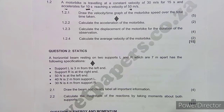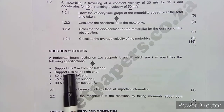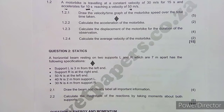Quickly looking into the questions from this paper, we are given a statics question worth 10 marks. We are given a horizontal beam resting on two supports, L and R, which are seven meters apart. The specifications are: support L is three meters from the left end, support R is at the right end, 50 newtons at the left end, 40 newtons two meters from support L, 30 newtons four meters from support R. Draw the beam and clearly label all important information — all forces and distances.